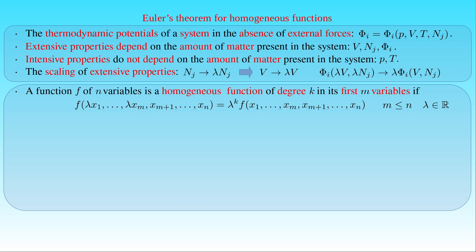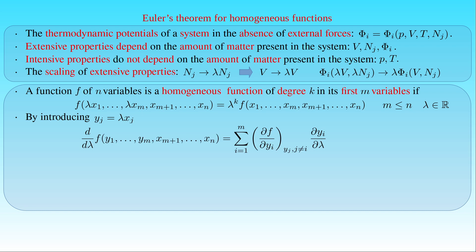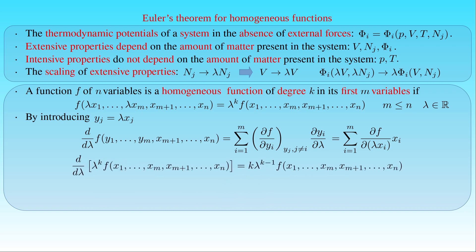We now compute the derivative of this equation with respect to the parameter λ. Introducing the notation y for λxᵢ, we can write the derivative of the left-hand side using the chain rule for yᵢ. We obtain the sum of the partial derivative of f with respect to yᵢ (constant yⱼ, j ≠ i) times the partial derivative of yᵢ with respect to λ, from i equals 1 to m. Substituting the definition of yᵢ, the derivative of yᵢ with respect to λ is simply xᵢ. The derivative of the right-hand side, λᵏ times f with respect to λ, is equal to k times λᵏ⁻¹ times f.